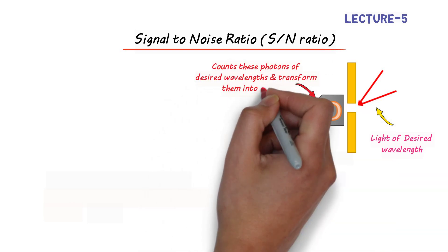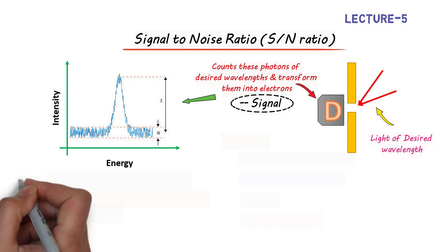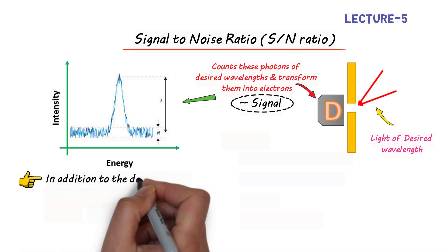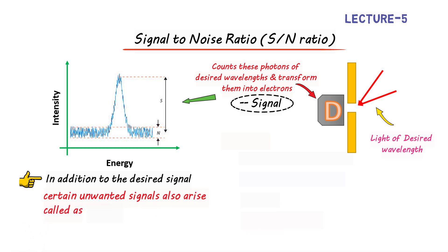The detector transforms them into electrons to generate a signal. In addition to the desired signal produced, certain unwanted signals also arise called noise, as is clearly visible from the diagram.